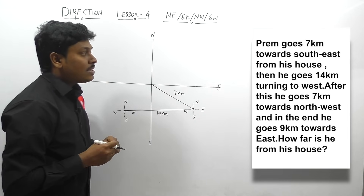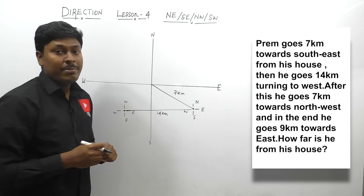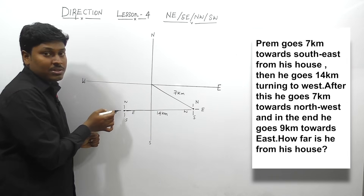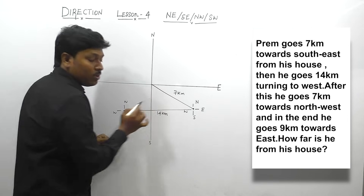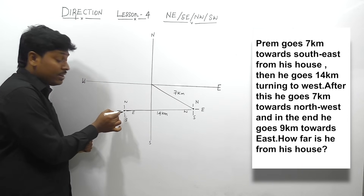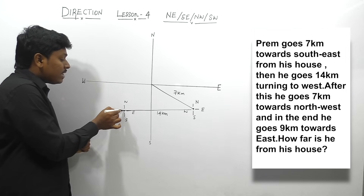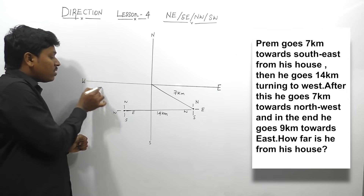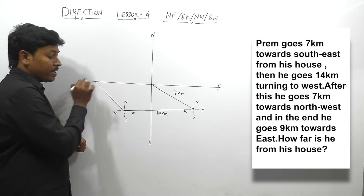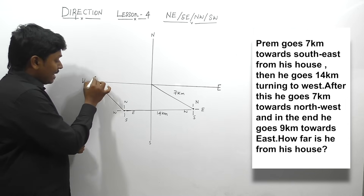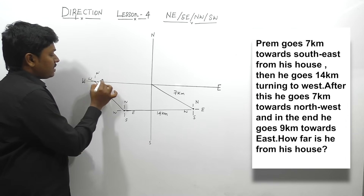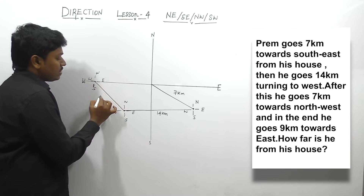Next, he goes 7 km towards north-west. So from this point, again 7 km towards north-west. We know that this is also 7 km and this is also 7 km. He is covering 7 km towards north-west, so north-west will be this direction, and he will be at this point. Draw a small direction — north, south, west and east. This is also 7 km.